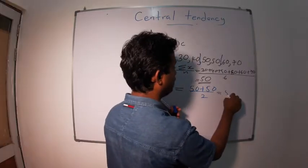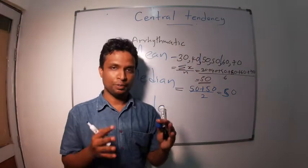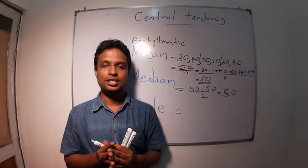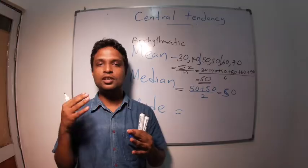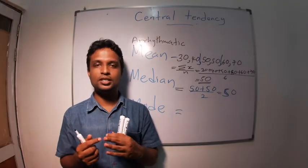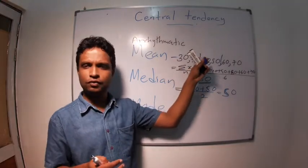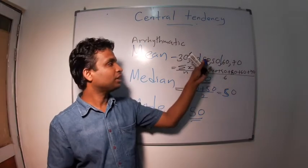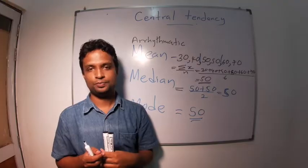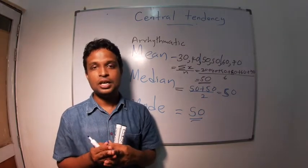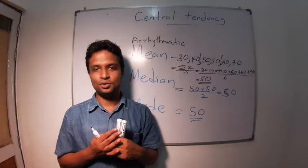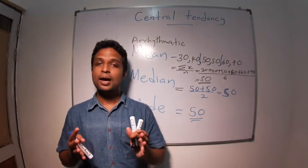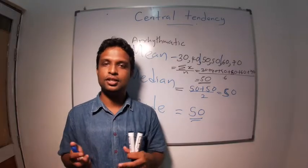What is mode? Mode is the most frequently occurring number. So what is the most frequent number here? It is 50, because 50 appeared two times in the distribution. All others appeared only once. So mode is 50. Now primary class is over. Next we need to know what are the basic applications of these three.